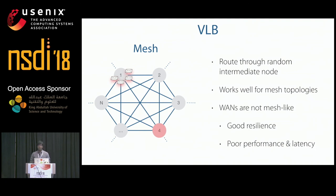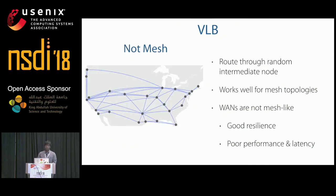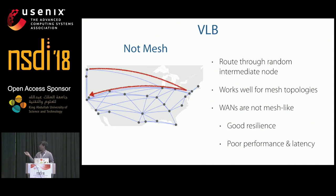VLB works by routing packets through random intermediate hops. The sender sends packets to other nodes at random, and those intermediate nodes forward packets to their destination. VLB works well in mesh-like topologies and is robust to failures, and has been applied in wide area networks. However, wide area networks do not have mesh-like topologies, so VLB often leads to very long paths, especially when source and destination are close by — for example, sending traffic from Seattle to San Francisco via New York — leading to high congestion and degraded performance.